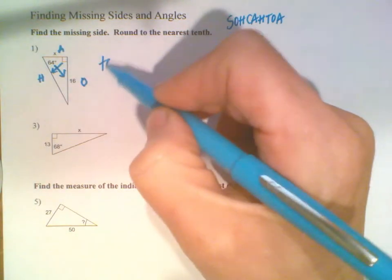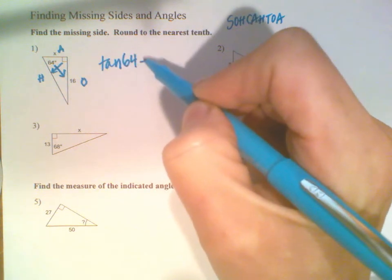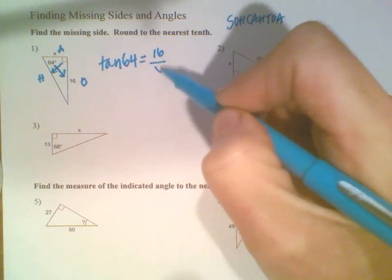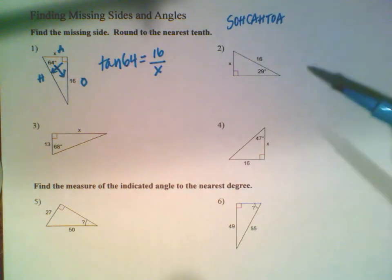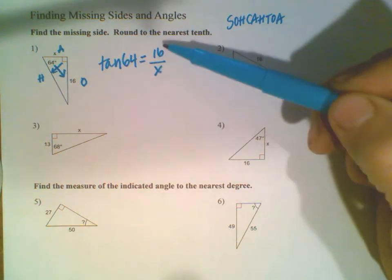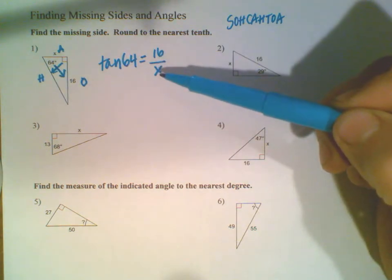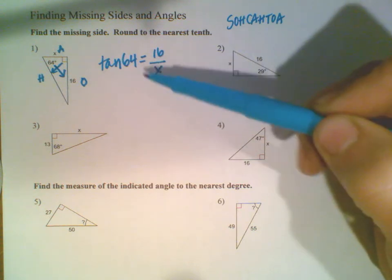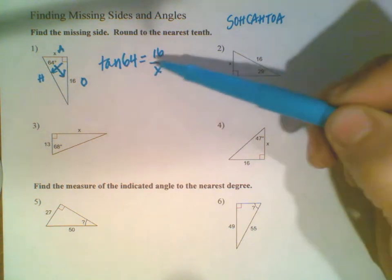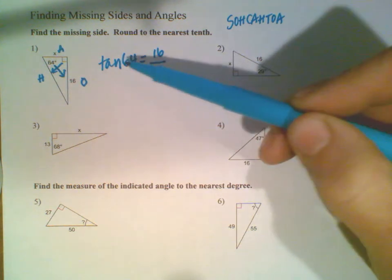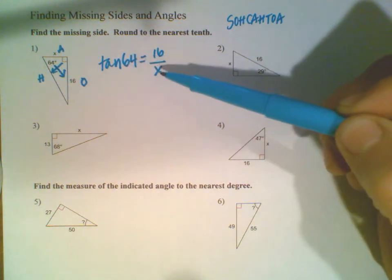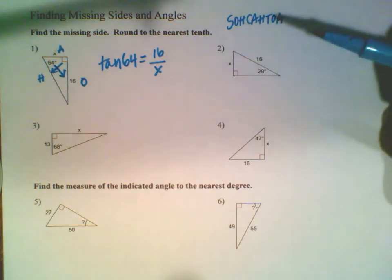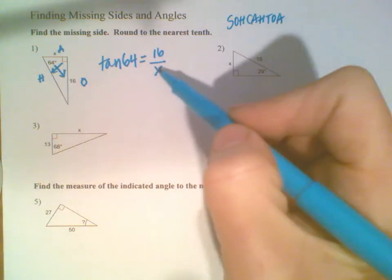I do tangent of the angle equals the opposite over the adjacent. The variable X is in the denominator at the bottom of this fraction, so I have to flip-flop these two things. To solve, I end up using division. If it were on the top I would use multiplication, but this one's on the bottom.